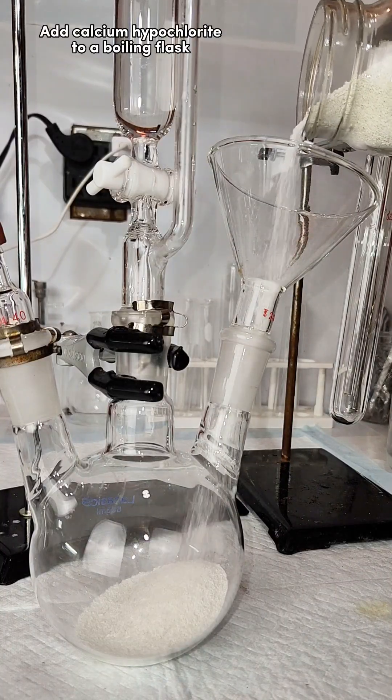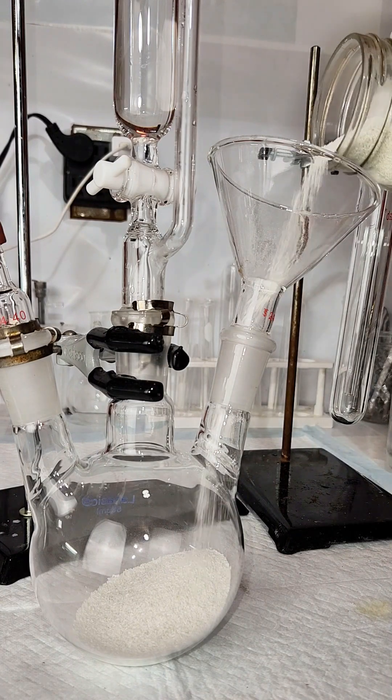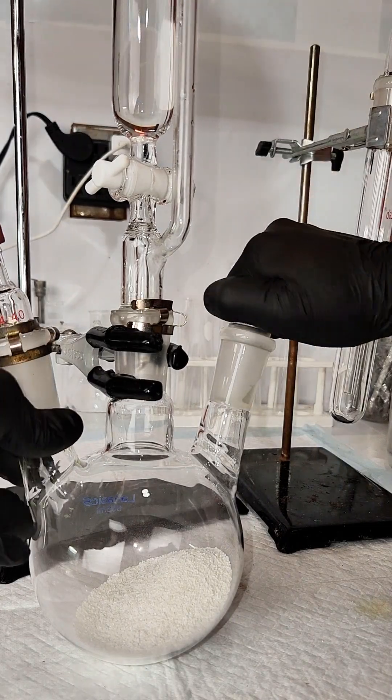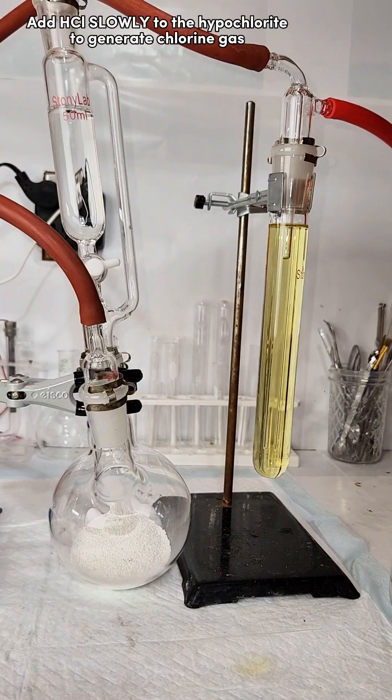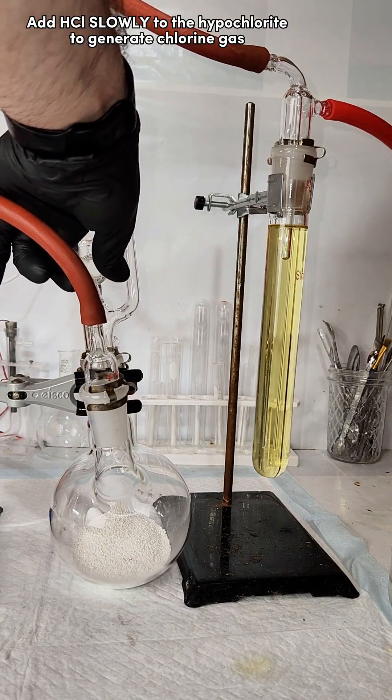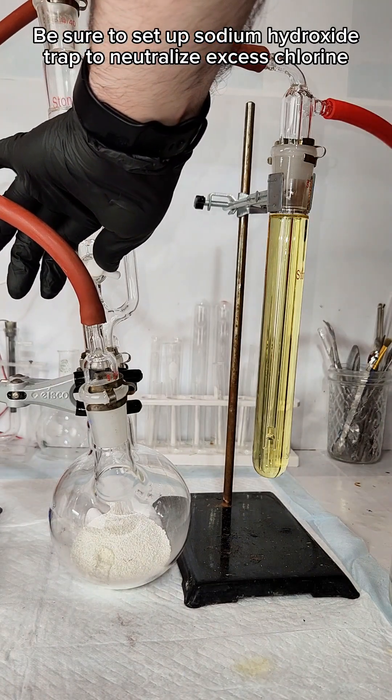To generate my chlorine gas, I add some calcium hypochlorite pool shock to a three-neck boiling flask and stopper it. I then set up an addition funnel filled with concentrated hydrochloric acid, which will be slowly dripped into the calcium hypochlorite. The two chemicals will immediately and exothermically react to form chlorine gas and calcium chloride.